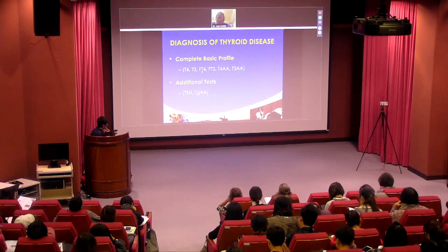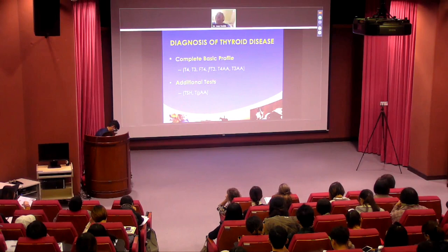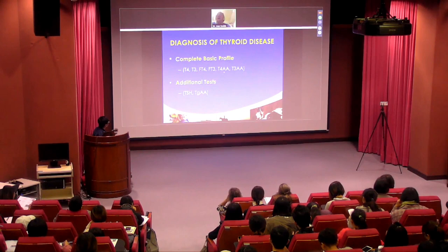The free T4 is the free unbound fraction of the total and it's 0.1% of the total — a very tiny amount. Similarly, the free T3 is a tiny fraction of the total T3, and it's the unbound fraction. These are the biologically important forms of the parent hormones.